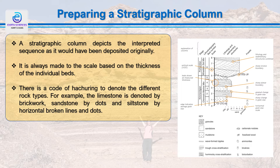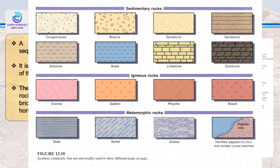Even if the beds are faulted or folded, we restore them to their original horizontal position when drawing the stratigraphic column. There is a standard code for denoting different rock types — for example, limestone is denoted by bricks, and sandstone by dots and horizontal broken lines. That is how we mark different lithologies and fossils, and that is how stratigraphic columns are prepared.